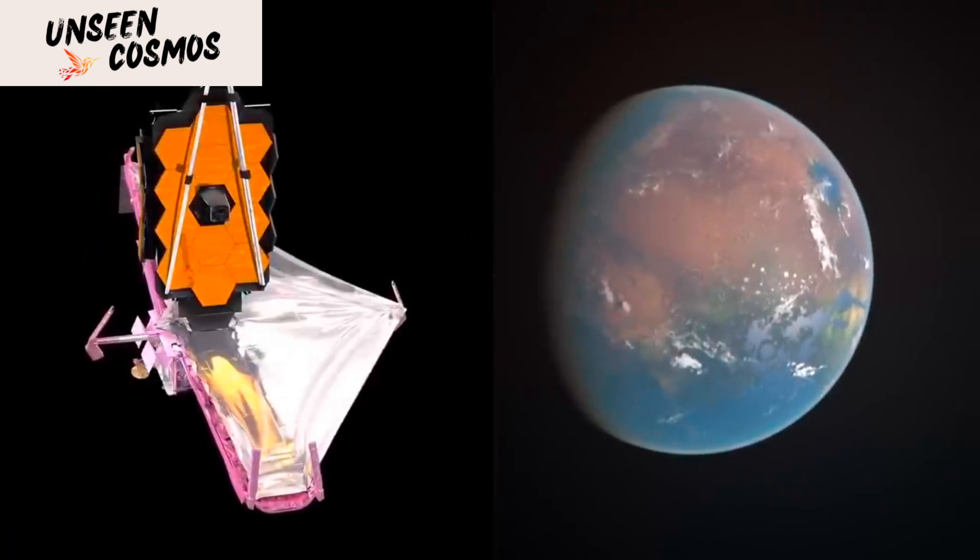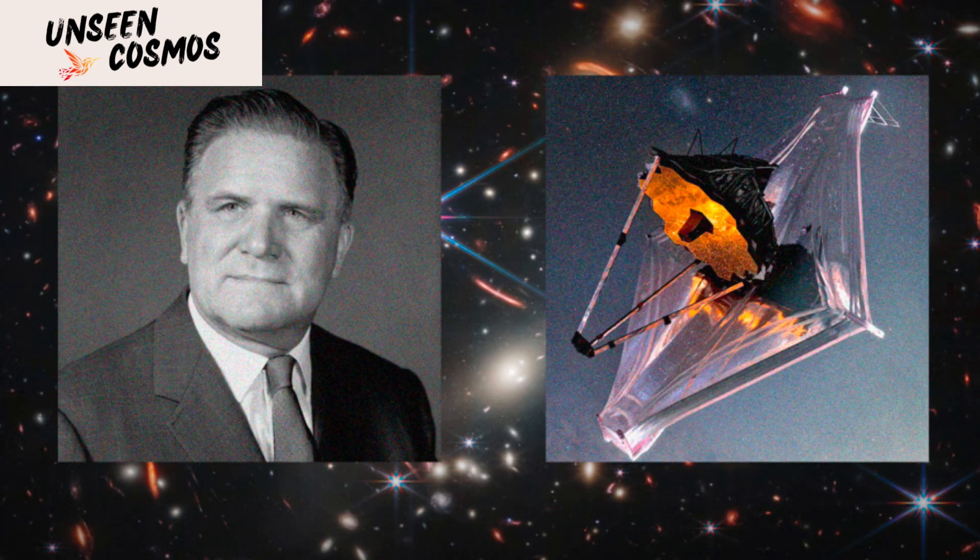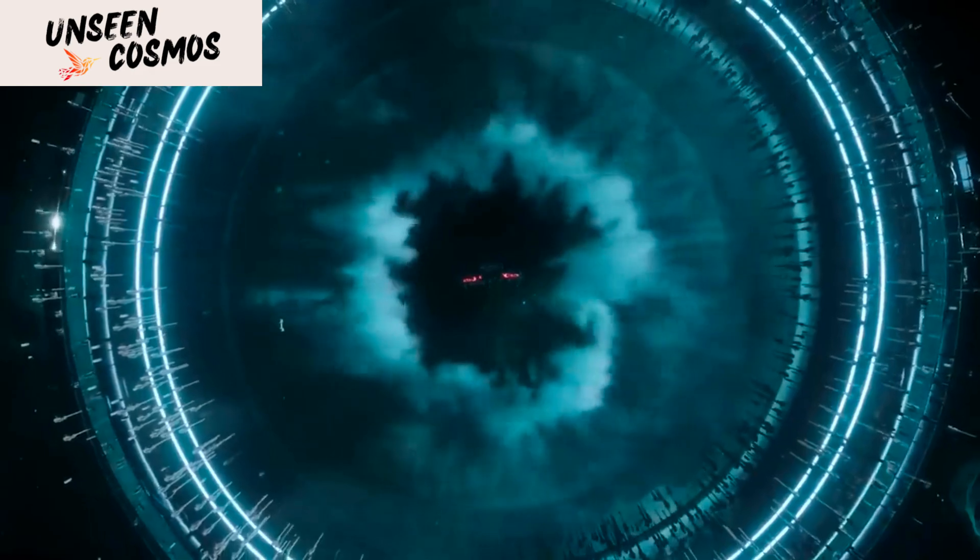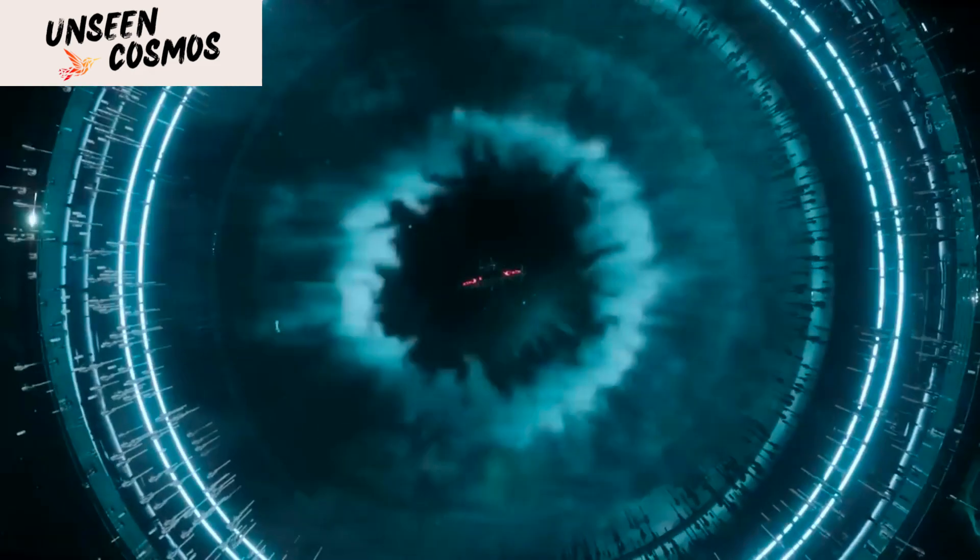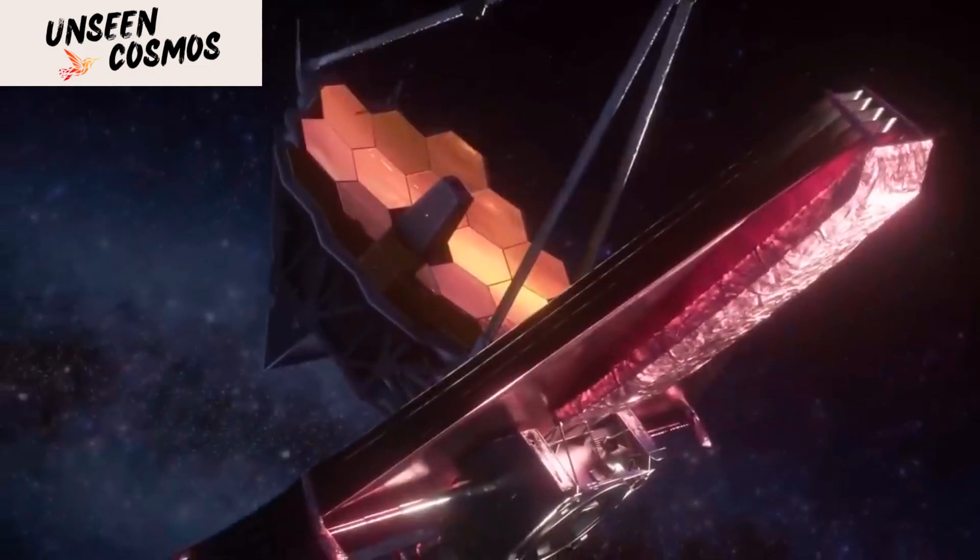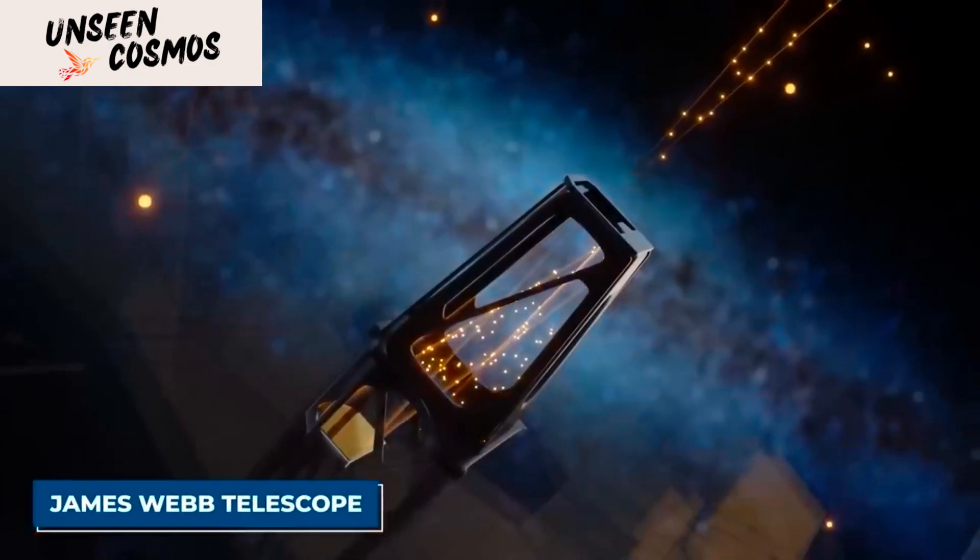The James Webb Space Telescope is named after James E. Webb, who served as the second administrator of NASA from 1961 to 1968. The telescope is a joint project of NASA, ESA, and CSA, and it is designed to be the successor to the Hubble Space Telescope.